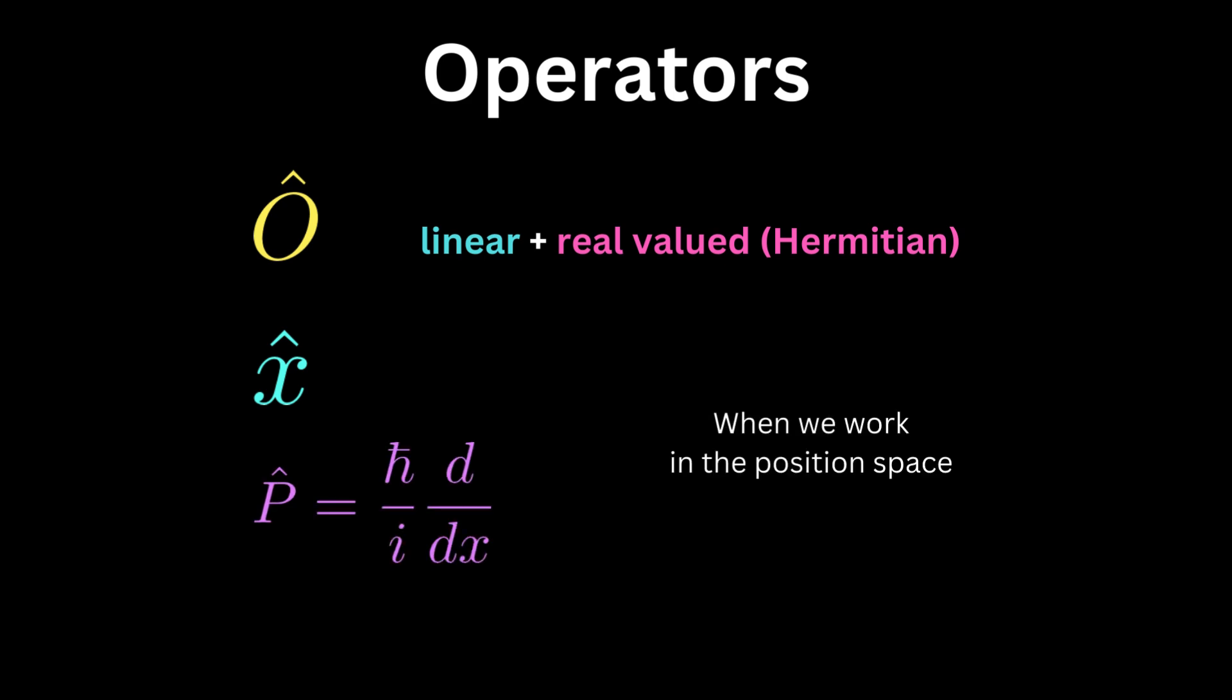With every physical value that can be measured, like the position, the momentum, the energy, there exists a linear and real function called an operator. We denote these functions by a hat on the top. Remember the Hilbert space we mentioned? Well, I would like to think about the operator as the representer of some Hilbert space. The position space has a position operator, the momentum space, the energy space, and so on. Why I'd say that?